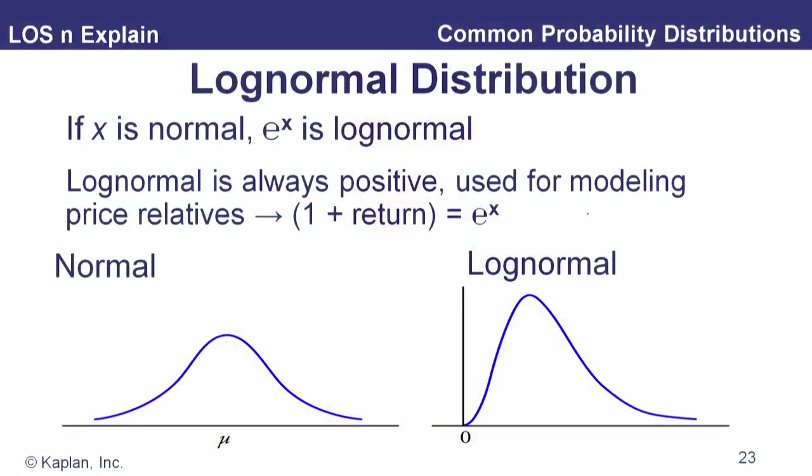Our next topic is the log normal distribution. Why do we care about it? When we want to model a stock price, prices don't go below zero, but our normal distribution goes from minus infinity to plus infinity — so maybe that's not the best distribution for modeling portfolio returns or prices. We like to use the log normal because it is bounded by zero: it is never negative, so it works well for modeling prices.